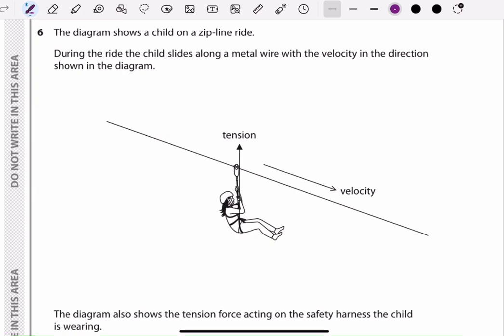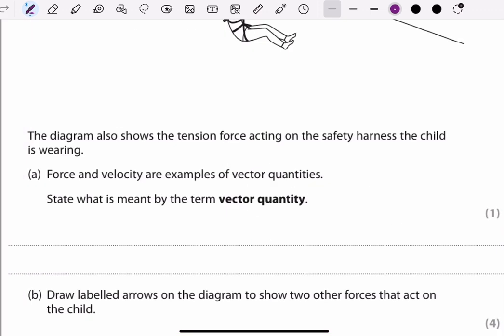And there is a tension force acting on the safety harness. Section A: define what a vector quantity is. A vector quantity is a physical quantity that has both magnitude and direction. Magnitude means the value and the size. For example, we have forces, velocity, and acceleration. Unlike scalar quantities which only have magnitude, vectors provide a complete description by including the direction in which the quantity acts.